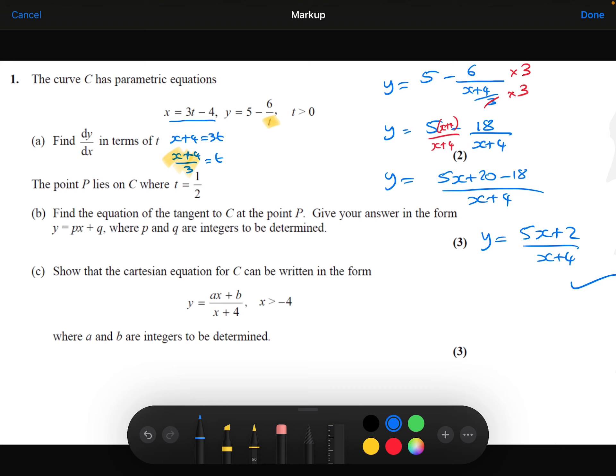And that is in the form that we needed. That does match up with this. That's my answer. A is 5 and b is 2.